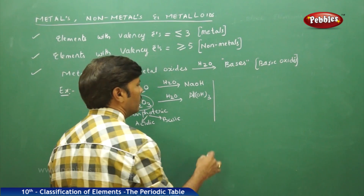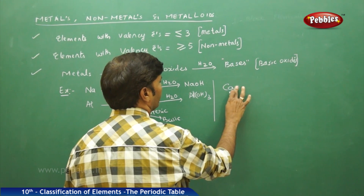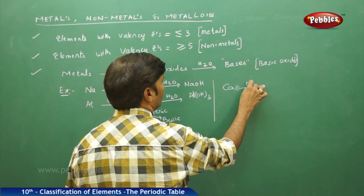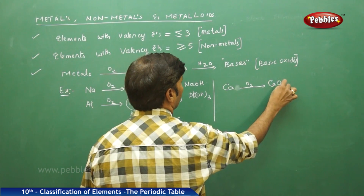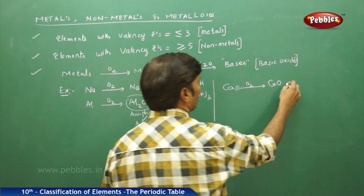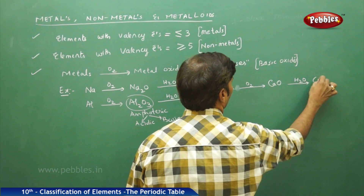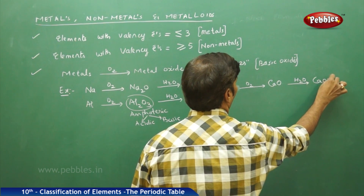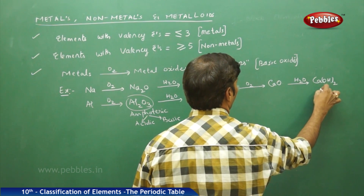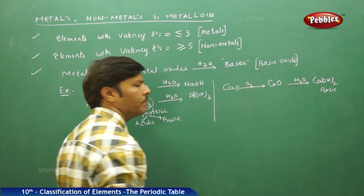If you take calcium, for example, calcium reacts with oxygen to form calcium oxide, and this calcium oxide upon hydrolysis gives calcium hydroxide. It is a base, so it is basic in nature.